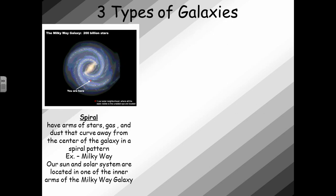For the three types of galaxies, the spiral galaxy has arms of stars, gas, and dust that curve away from the center of the galaxy in a spiral pattern, as you can see in the picture above. The picture above is actually the Milky Way galaxy, which is the galaxy that we live in. If you look at the picture, you can see that the red dot is showing where our solar system is located in our galaxy. So, our sun and solar system are basically located in one of our inner arms of the Milky Way galaxy.